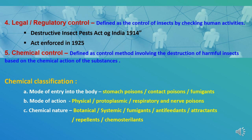The fourth method of applied insect control is legal or regulatory control, defined as control of insects by checking human activities. To prevent the introduction of foreign pests, the Government of India enacted the Destructive Insect Pest Act of India, 1914, enforced in 1925. Under this act, states and countries are empowered to enact laws necessary to prevent the spread of serious pests within their areas and to enforce control measures against harmful pests and diseases.